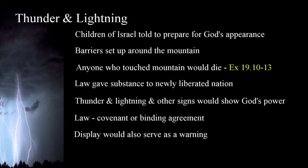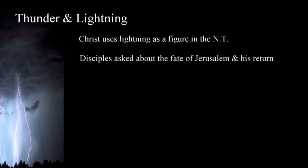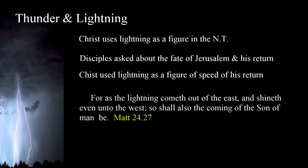A God who had defeated the pagan idols of Egypt and appeared in thick clouds, thunder, and lightning was one to be respected. In the New Testament, as Christ was speaking to his disciples concerning the fate of Jerusalem, they asked about his return and what sign they could expect before that happened. Christ answered their questions and employed lightning as a figure of the swiftness of his actions when he came back. Describing his return, Christ states: 'For as the lightning cometh out of the east and shineth even unto the west, so shall also the coming of the Son of Man be' — Matthew 24:27. Christ also stated that there would be no sign warning humanity before this took place.